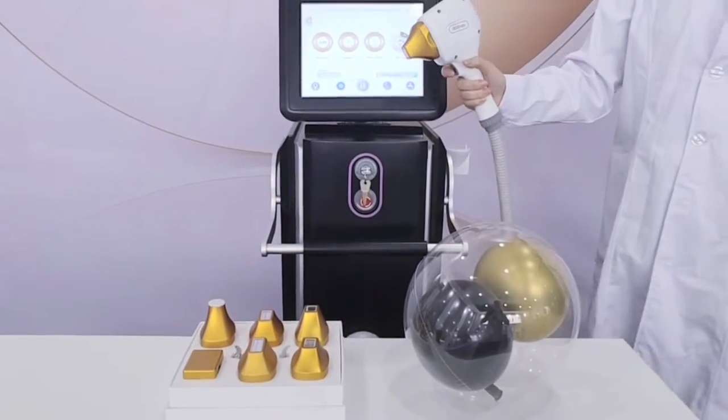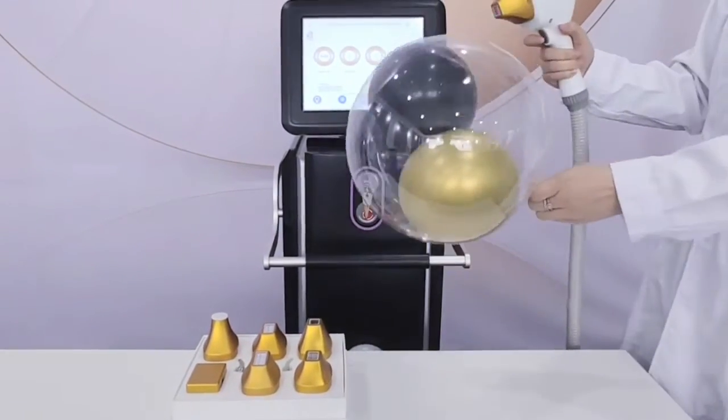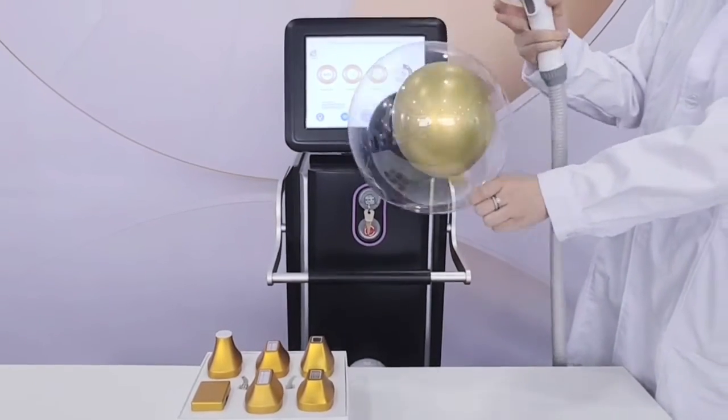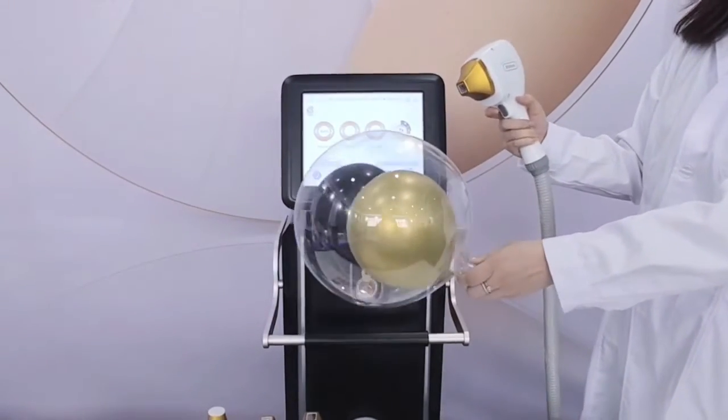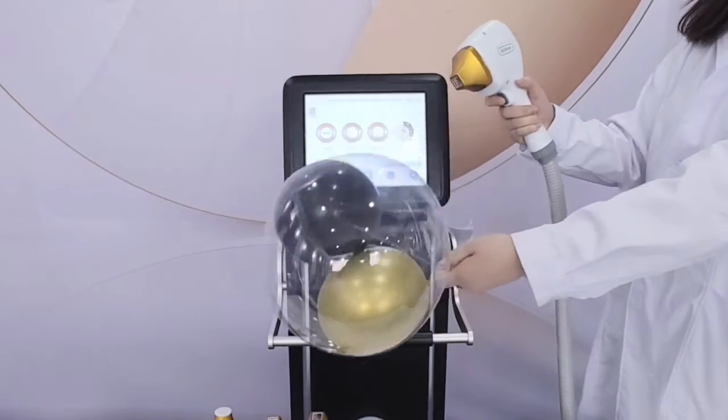This is the diode laser. Since it works on the follicle, the golden ball and the black ball will show you the follicle. Let's give it a try.